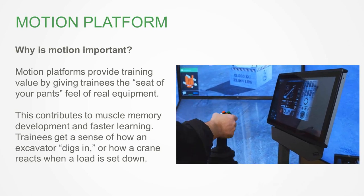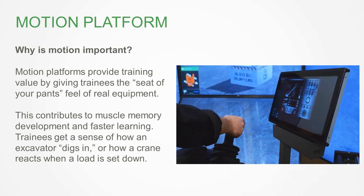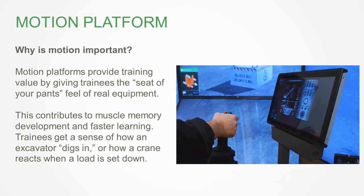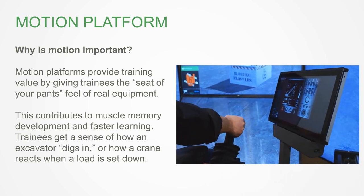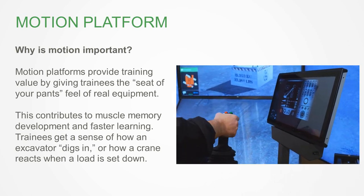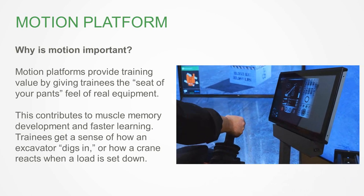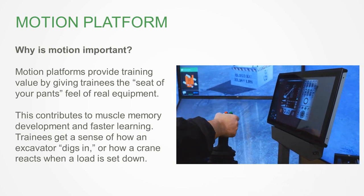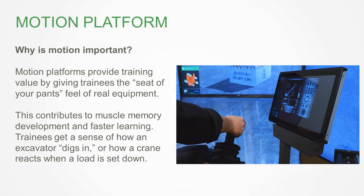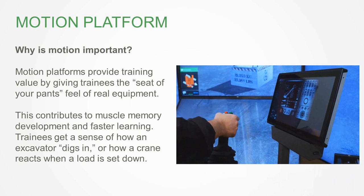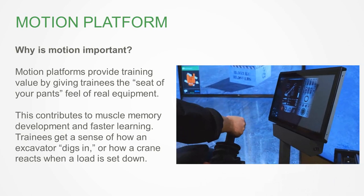What constitutes a simulator? What are the pieces of a simulator, and what should you really look for in those pieces? The first thing is the motion platform – it's the most obvious one. It's when it moves. If you ask an operator, they're using all their cues – their ears, their nose, the seat of their pants – to feel the equipment. What a motion platform does is facilitate that.